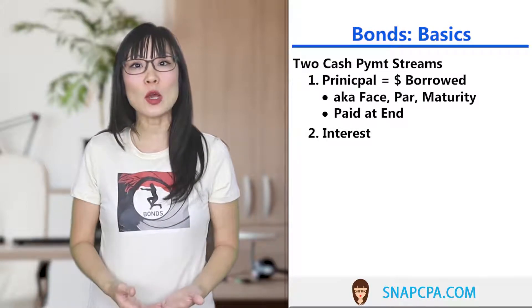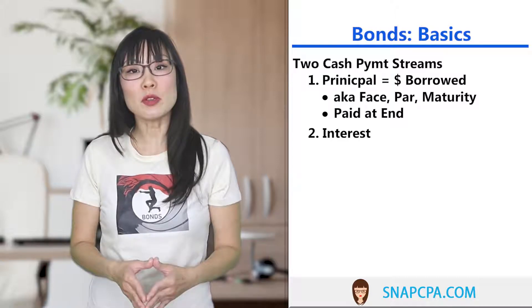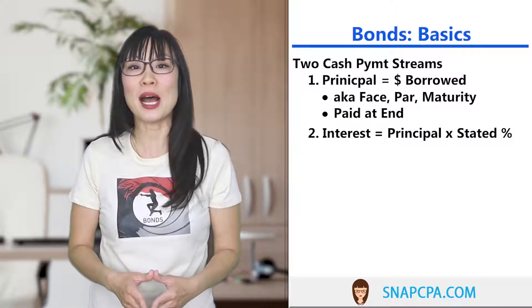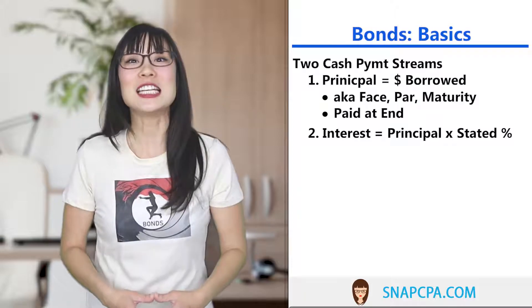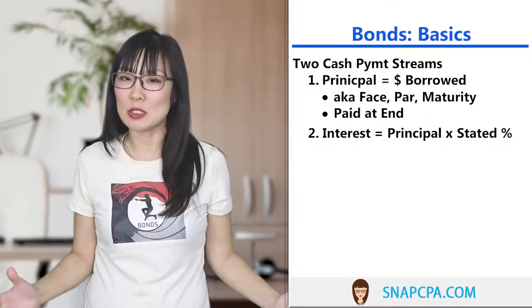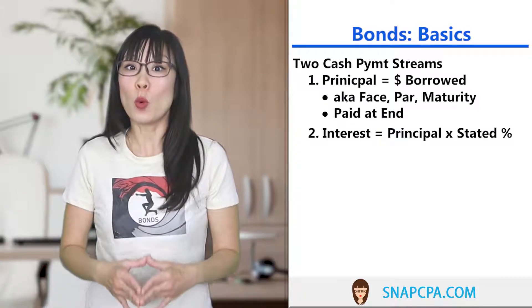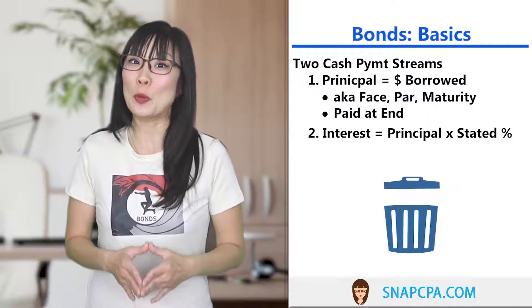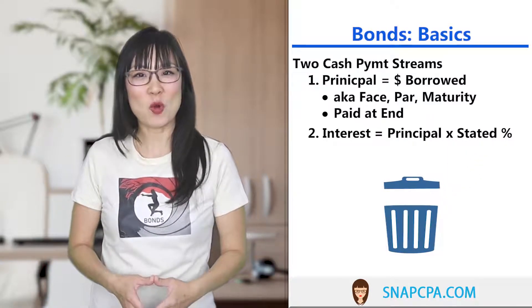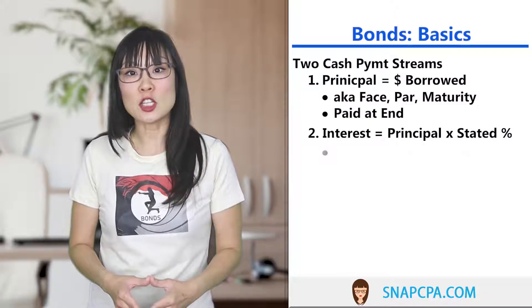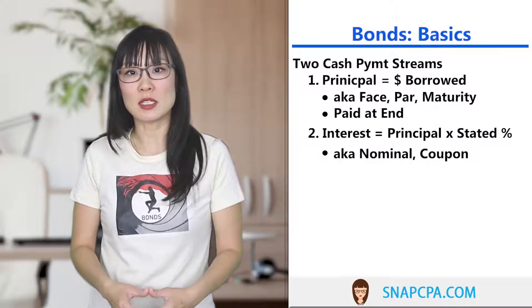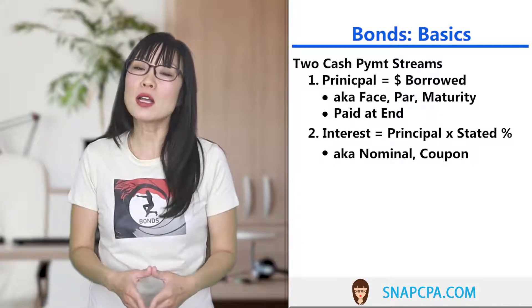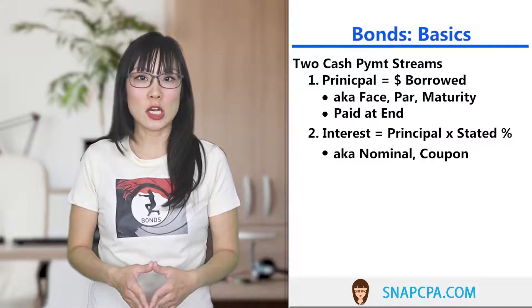For the exam, the interest will likely get paid annually or semi-annually. To compute the interest payment, we multiply the principal amount borrowed by the stated rate. The stated rate is only used to compute the interest payment — once you've computed the interest payment, throw that stated rate away. Note the stated interest rate also has a few different names: it can be called the nominal rate or the coupon rate.